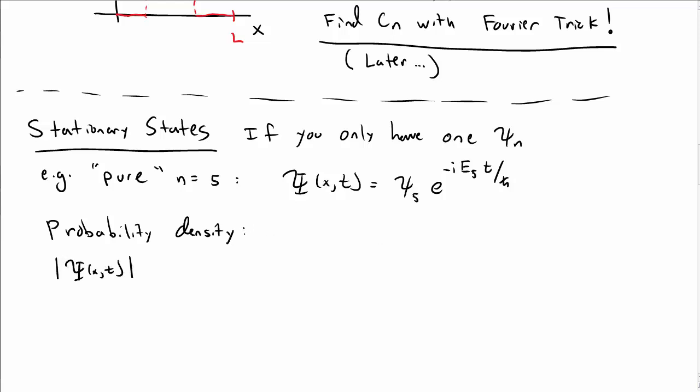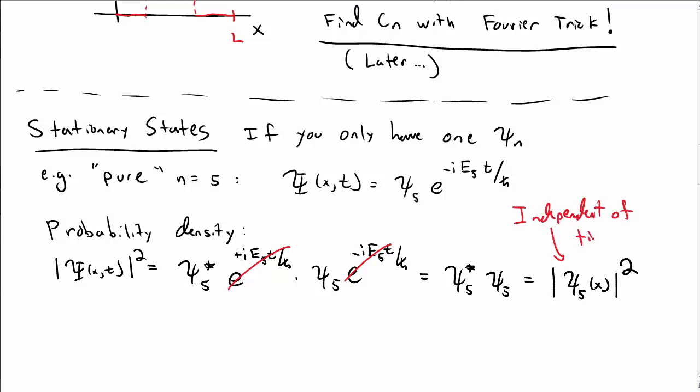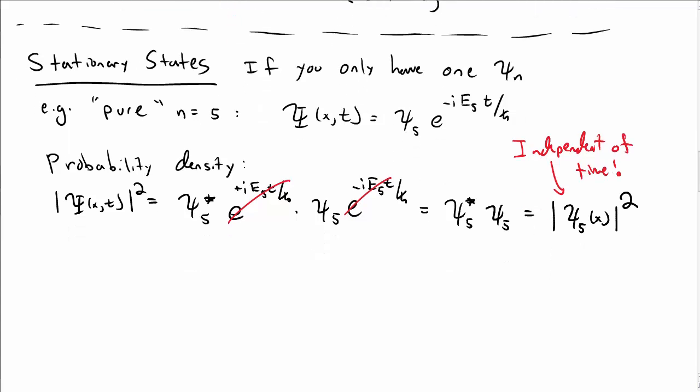So now let's look at the probability density. That's capital Ψ squared, or capital Ψ absolute value squared. So that's ψ_5 star and then the exponential with a positive sign, ψ_5 and then the exponential with the negative sign. The exponentials cancel, and so this is just ψ_5 star ψ_5, or the absolute value squared of ψ_5. Notice that this is actually now independent of time. We only have x dependence. In general, then, we say that a stationary state is a state where there's only one ψ sub n of x.